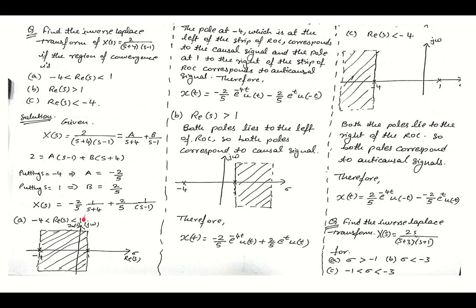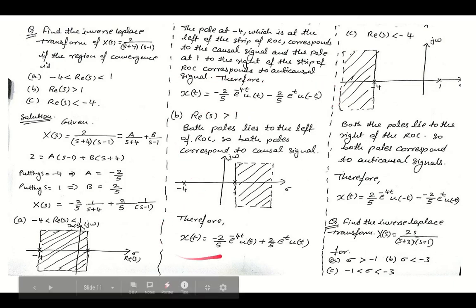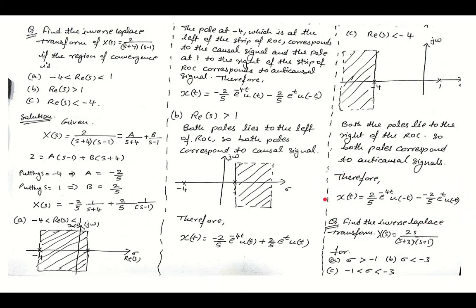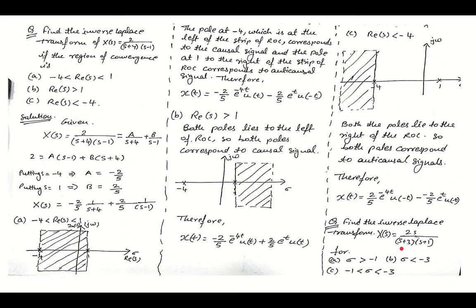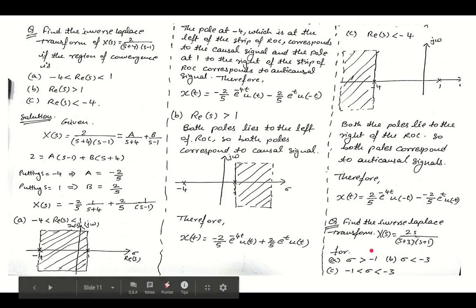We can see that the ROC plays a very important role in the calculation of the inverse Laplace, and there is a variation in the answers depending on the ROC. For practice, find the inverse Laplace of X(s) = 2s/((s+3)(s+1)) for: (a) σ > -1, (b) σ < -1, and (c) -3 < σ < -1, where σ is the real part of s.